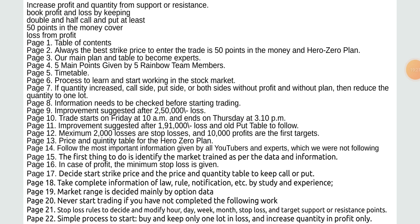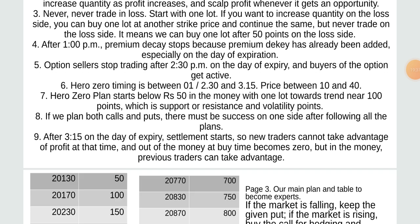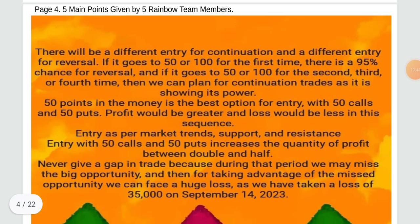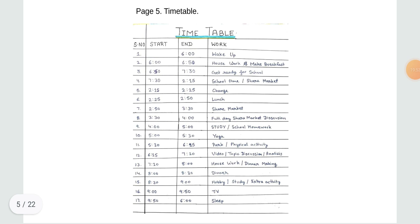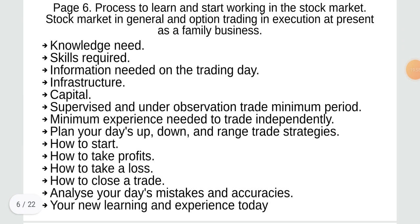1. Table of contents. 2. Always the best strike price to enter the trade is 50 points in the money and hero zero plan. 3. Our main plan and table to become experts. 4. Five main points given by five rainbow team members. 5. Timetable. 6. Process to learn and start working in the stock market.